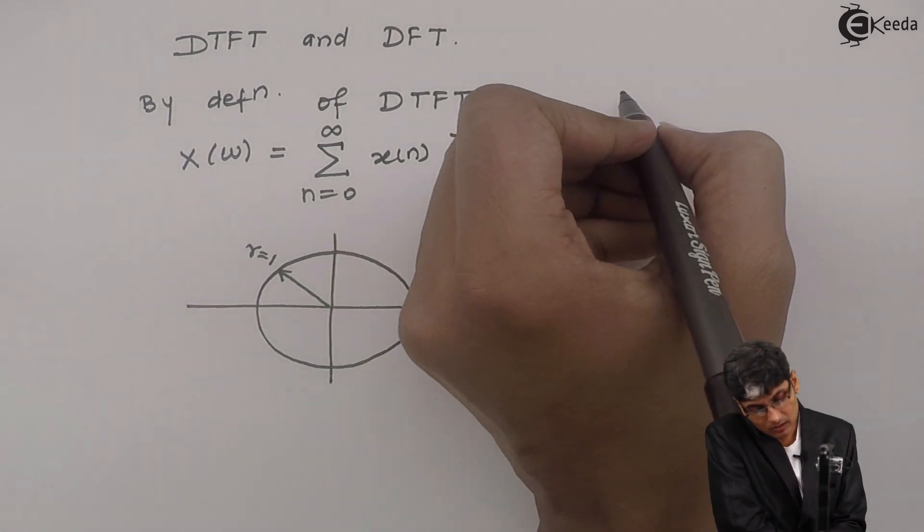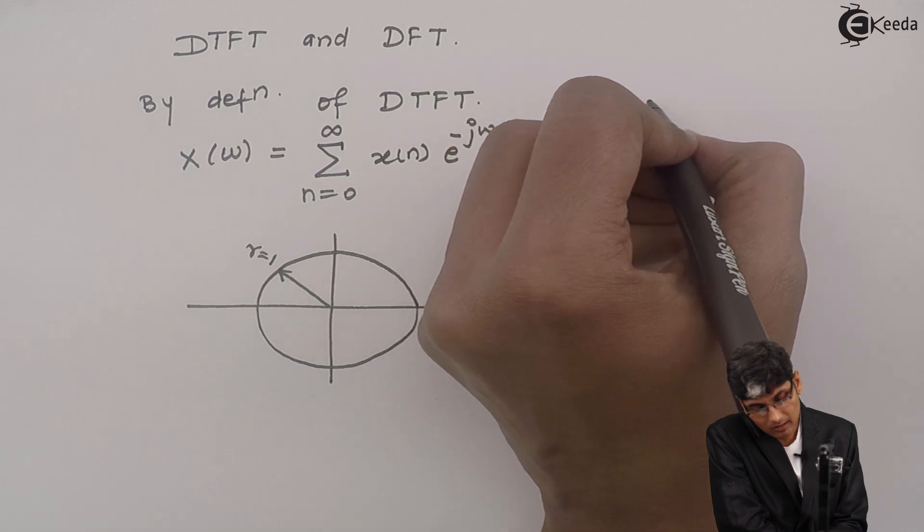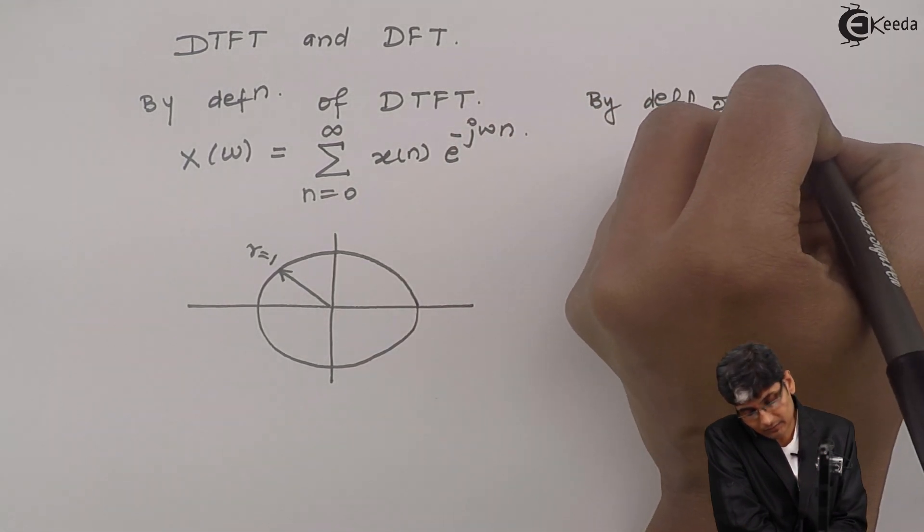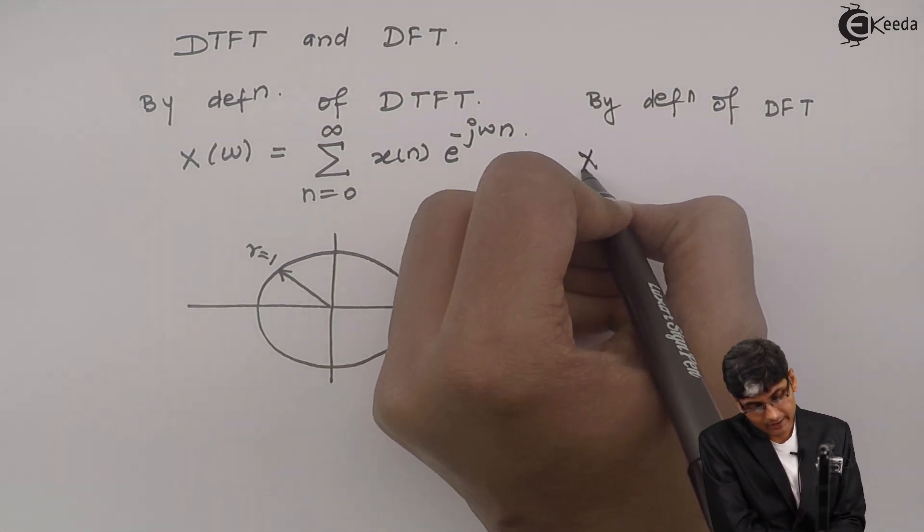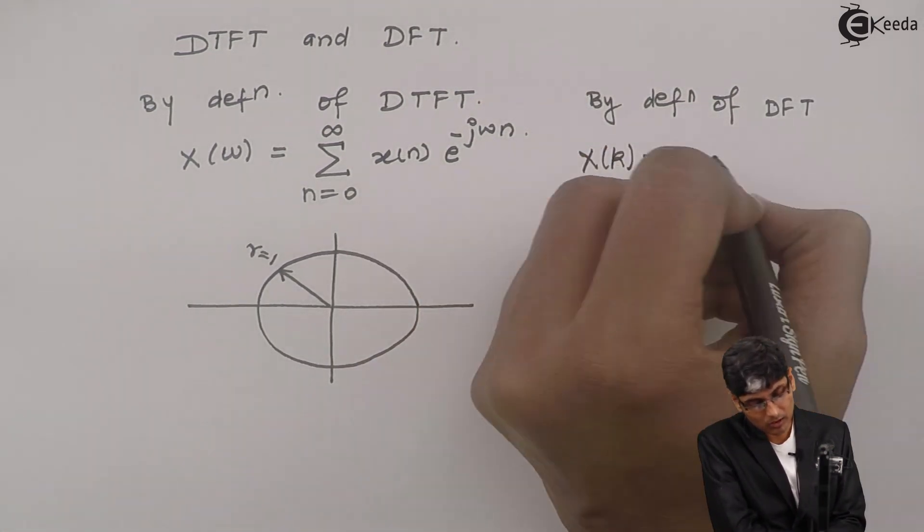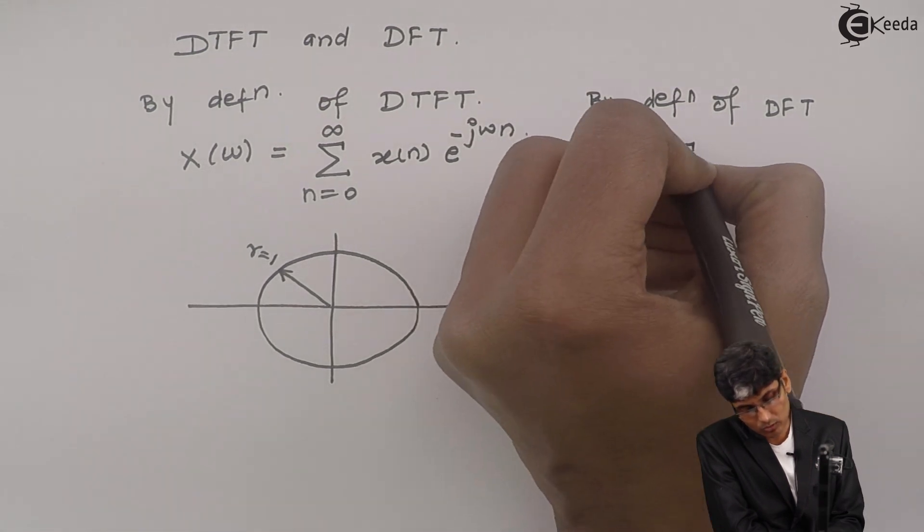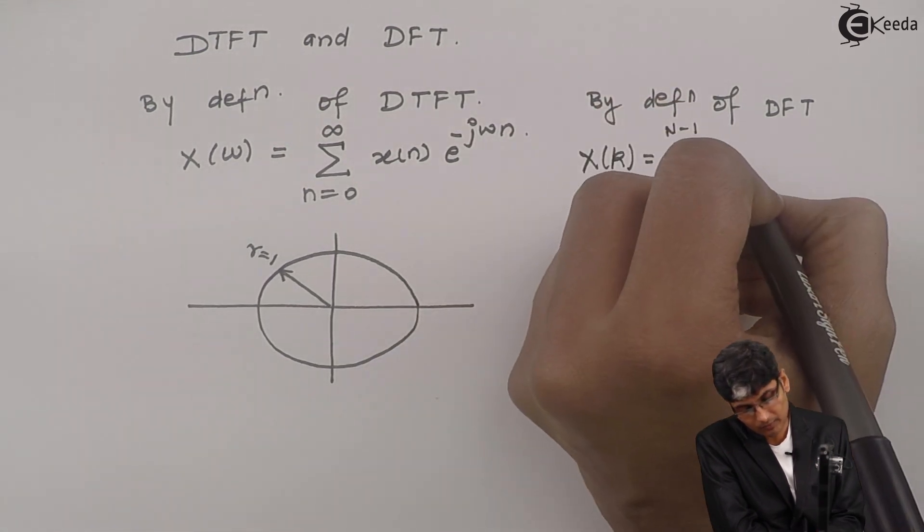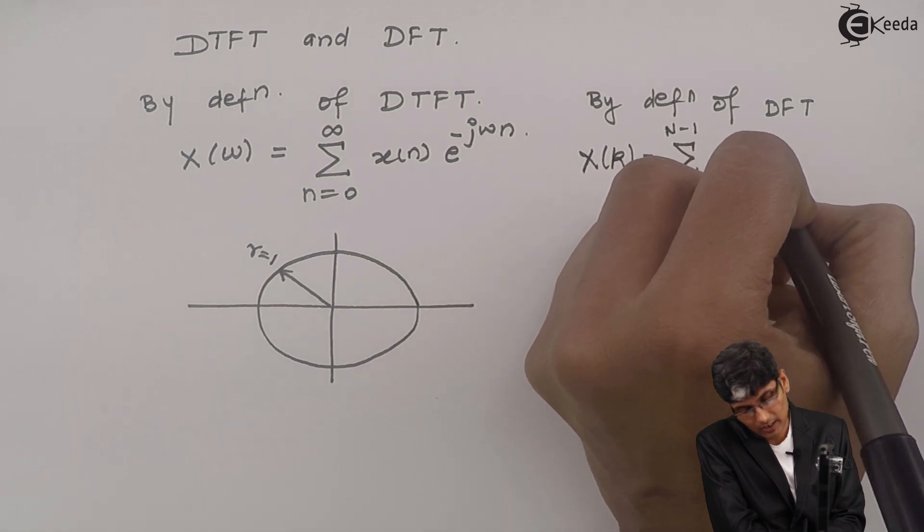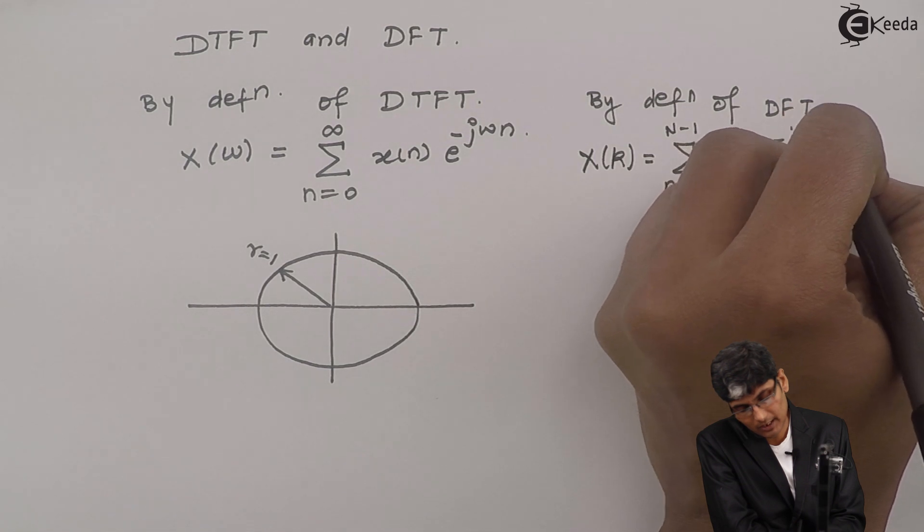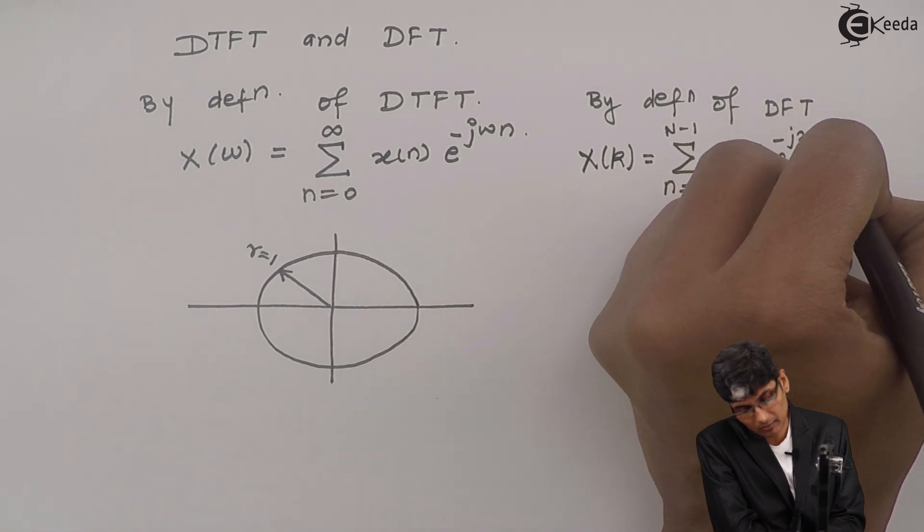Now, let us take by definition of DFT. It writes as x(k) which equals summation n going from 0 to N-1, x(n)e^(-j2πnk/N).